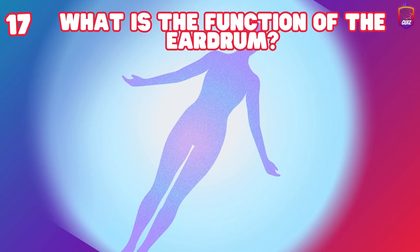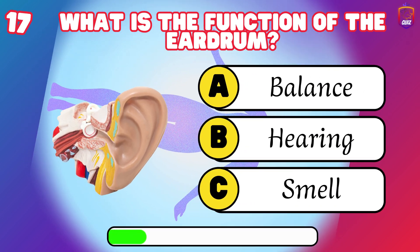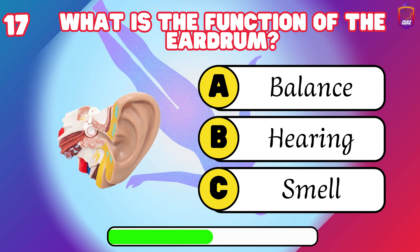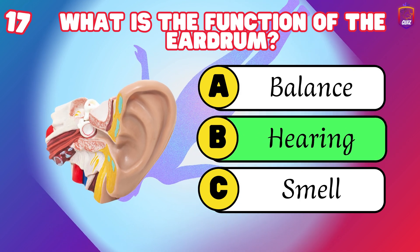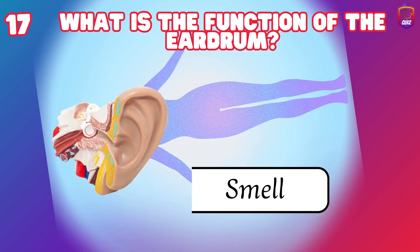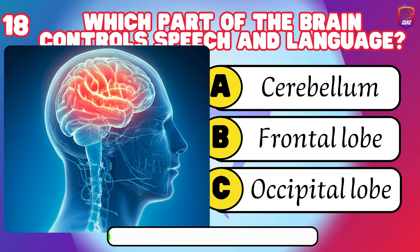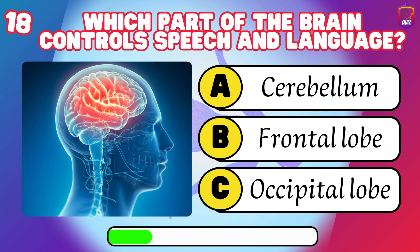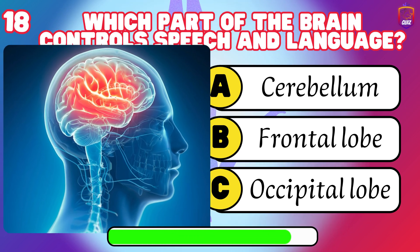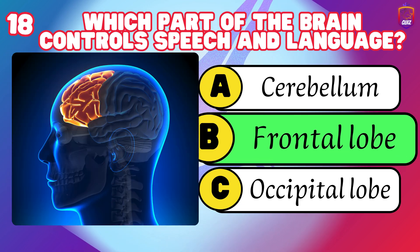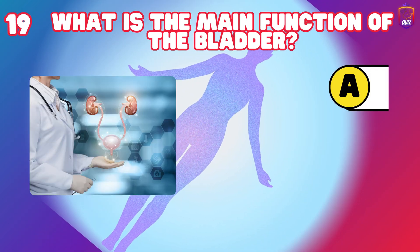What is the function of the eardrum? Frontal lobe. What is the main function of the bladder? Excretion.